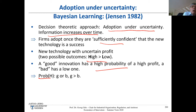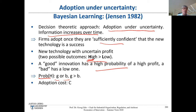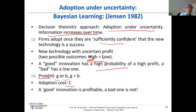Moving on with the model: the probability that you get a high outcome — a high profit — is G with a good innovation and B with a bad one. With a good innovation, say 75% probability of high profit; with a bad innovation, only 25%. You have adoption cost C. The key difference is that adopting a good innovation is profitable, while adopting a bad innovation is not.